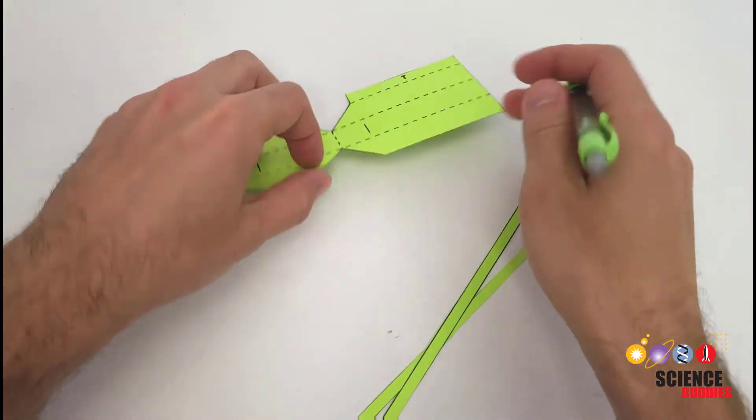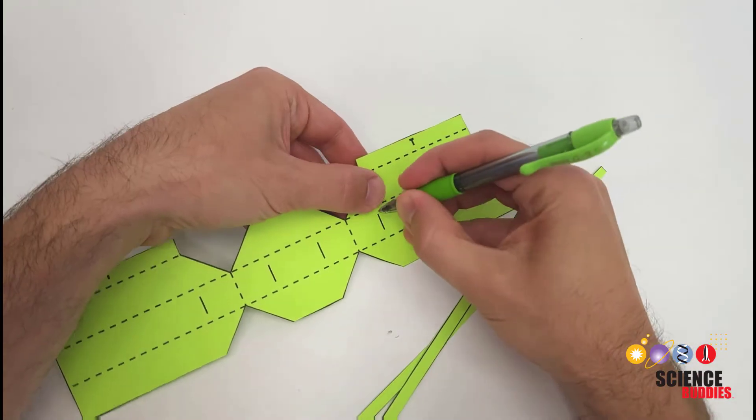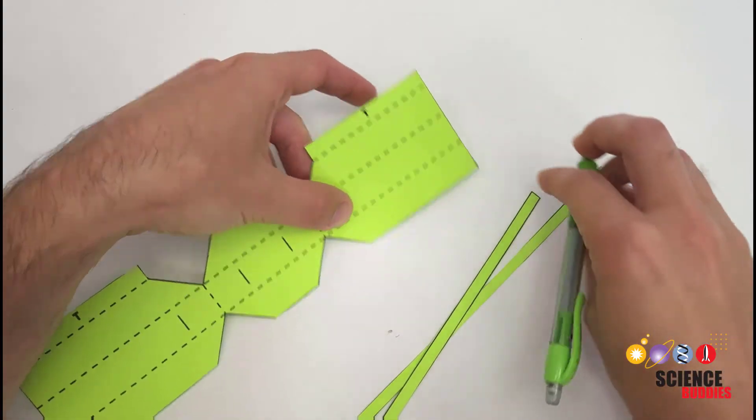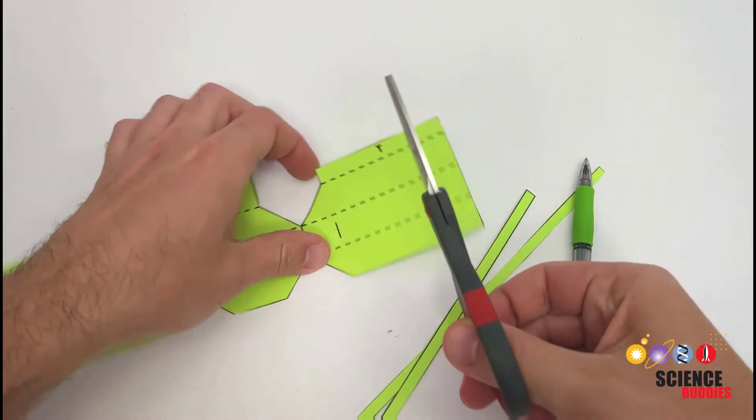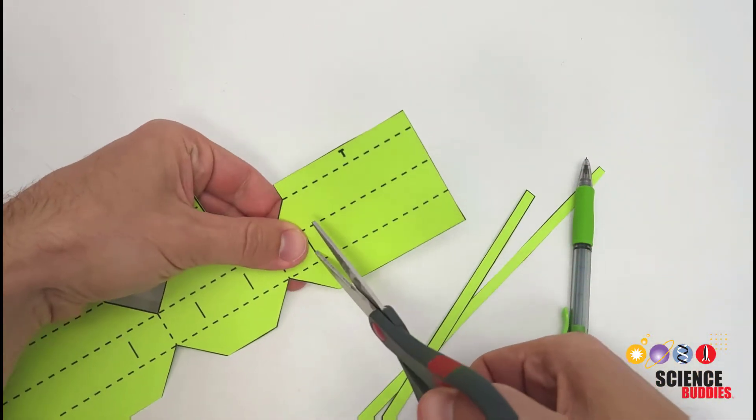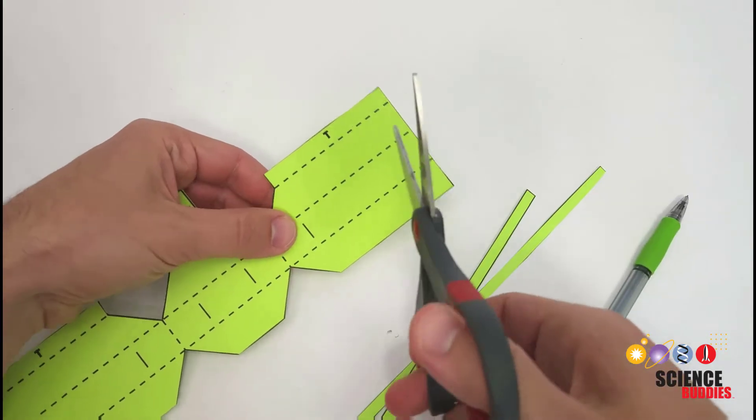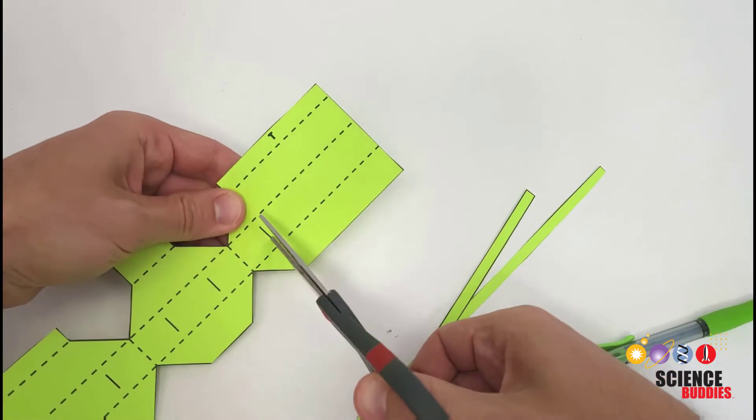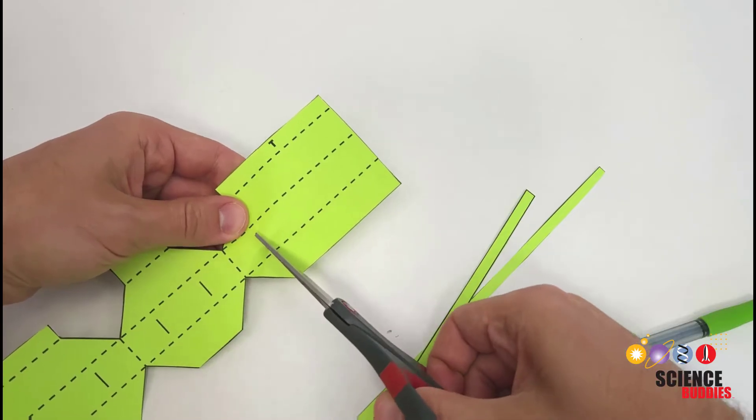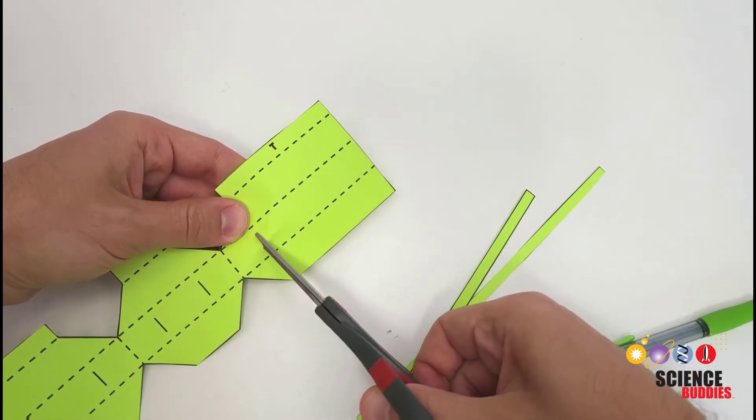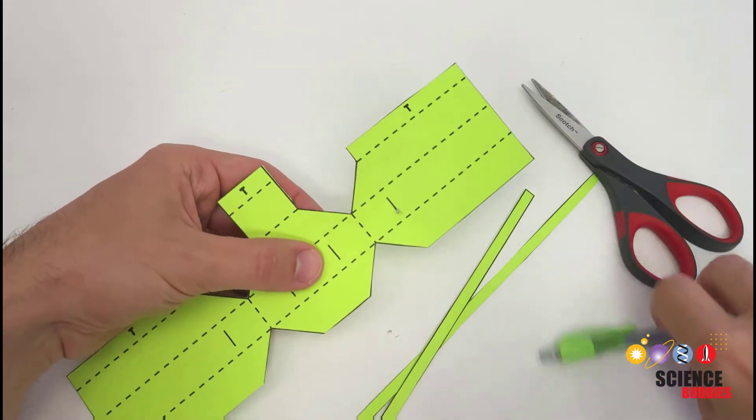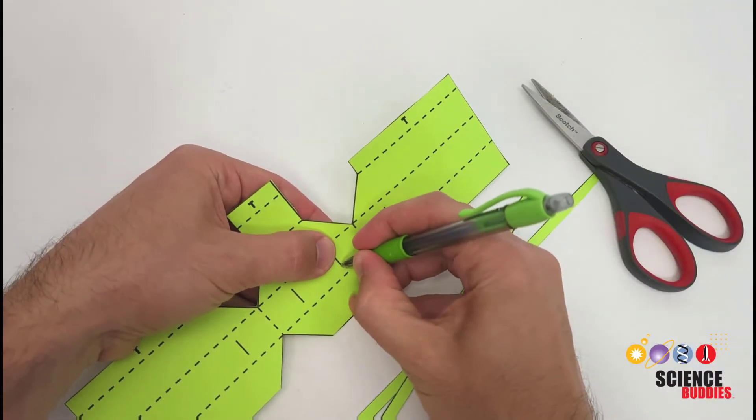Next you will need to cut out the slots for the tendons, and there are a couple different ways to do this. You can use something pointy like a sharp pencil or a pushpin to poke holes to get the cut started and then carefully use scissors to cut out along the solid line. But you want to be careful not to bend or kink the template too much when you're doing this since that can mess up the final 3D assembly of the gripper. So if you take this approach, do it very carefully and try to keep the paper as flat as possible.